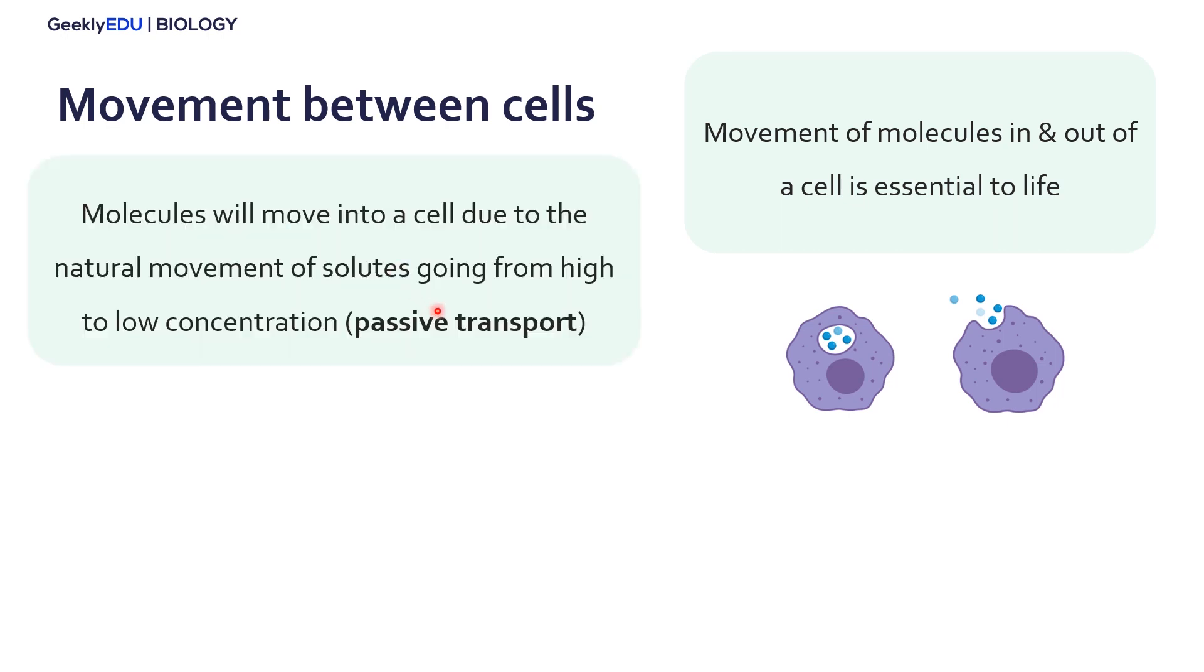There's two main types of movement in and out of a cell. The first is the natural movement of a solute, anything that dissolves in water, going from high to low concentration. This is called passive transport because no energy is required from the cell to move those molecules.